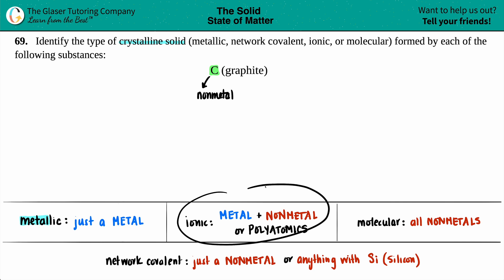Is it an ionic crystalline solid? Ionic comes from an ionic compound. Remember, all the way in the beginning of chem, ionic compounds are a metal plus a non-metal, or if you start seeing polyatomics. I just have a single non-metal here, so ionic is out.